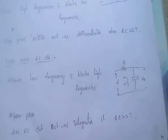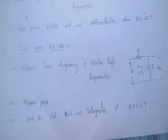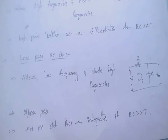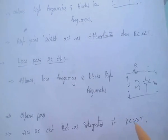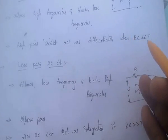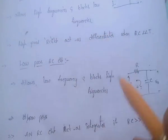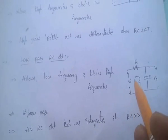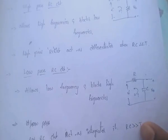The low pass RC circuit allows only low frequency signals and blocks high frequency signals. It acts as an integrator when RC is much greater than T.